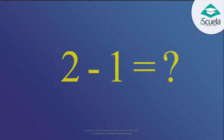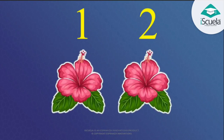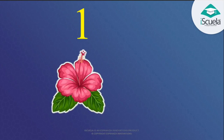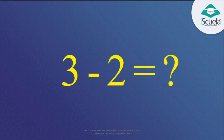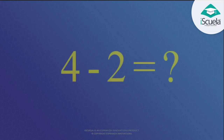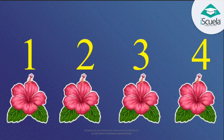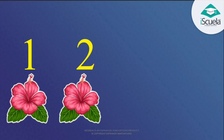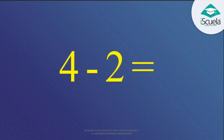2 minus 1 is equal to what? 2 minus 1 is equal to 1. Similarly, 3 minus 2 is equal to what? 3 minus 2 is equal to 1. Now look at this sum: 4 minus 2 is equal to what? 4 minus 2 — start counting: 1, 2. Good! So 4 minus 2 is equal to 2.